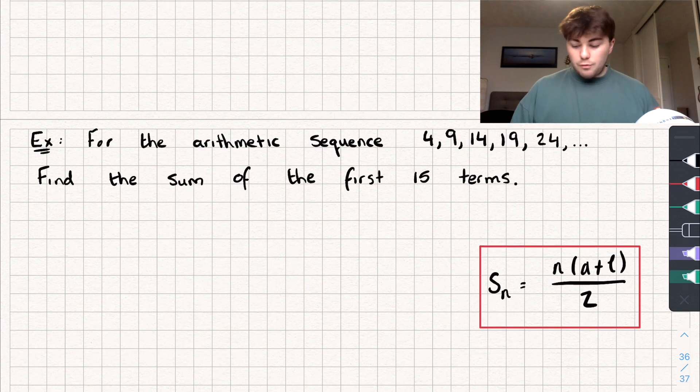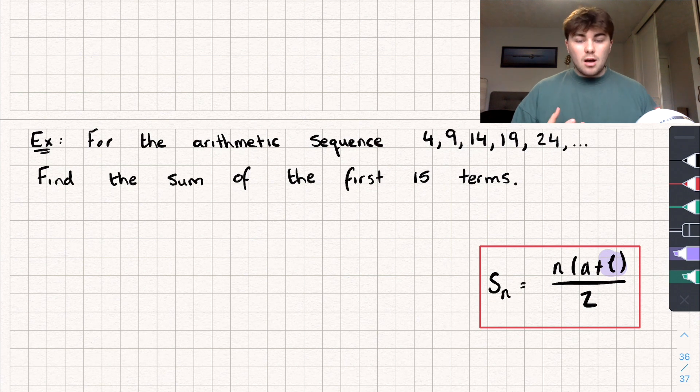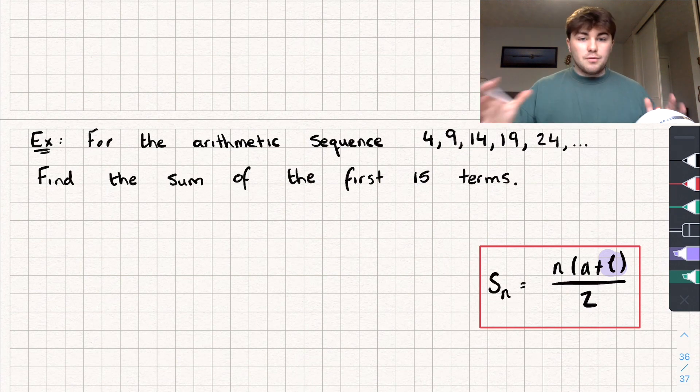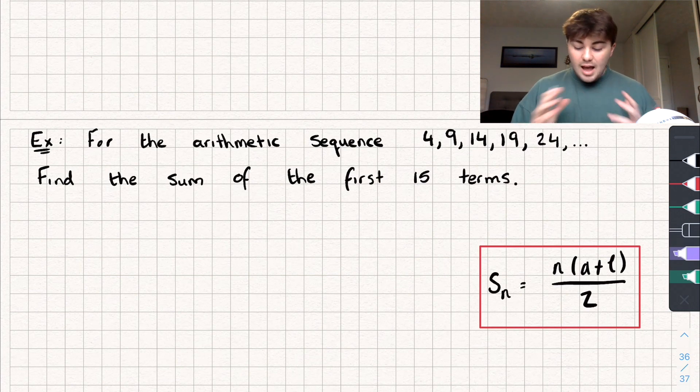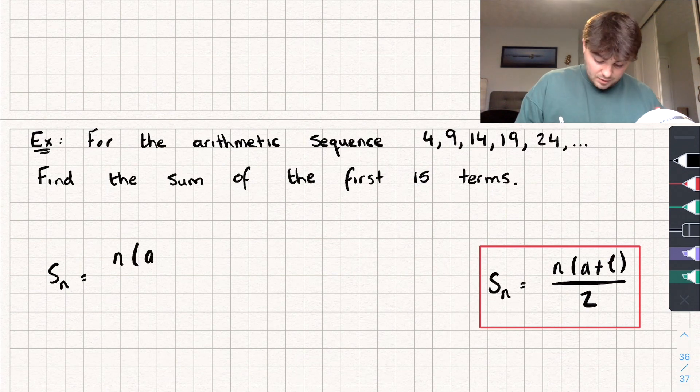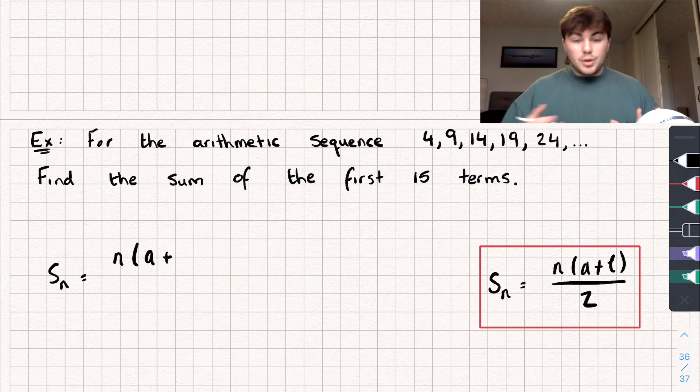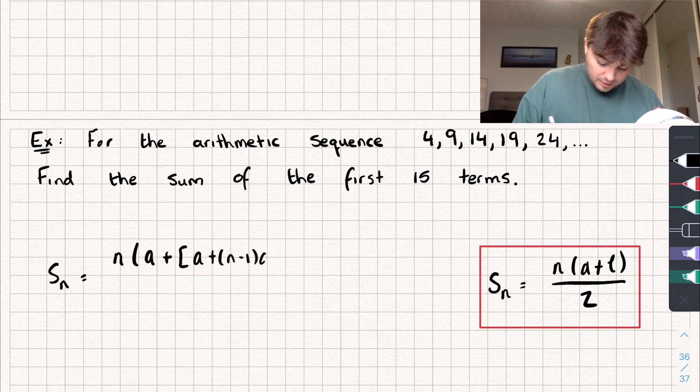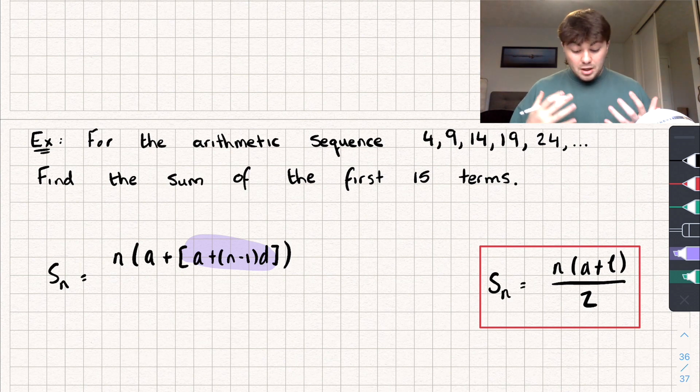Now there's a slight problem with our formula that we have at the minute, and that's that we need to know the last term. And if we look there, we haven't been given the last term, and sure we could work it out, we could keep adding on 5 until we got to the 15th term, but sometimes it might not be so easy to do. So we could just alter this formula ever so slightly, and all we have to do is, well, what is the last term going to be? Well, say we had it when it's S of N, we want to find the nth term. So that's going to be equal to N multiplied by the first term. And say we were going up to the nth term, well, we know the formula for the nth term.